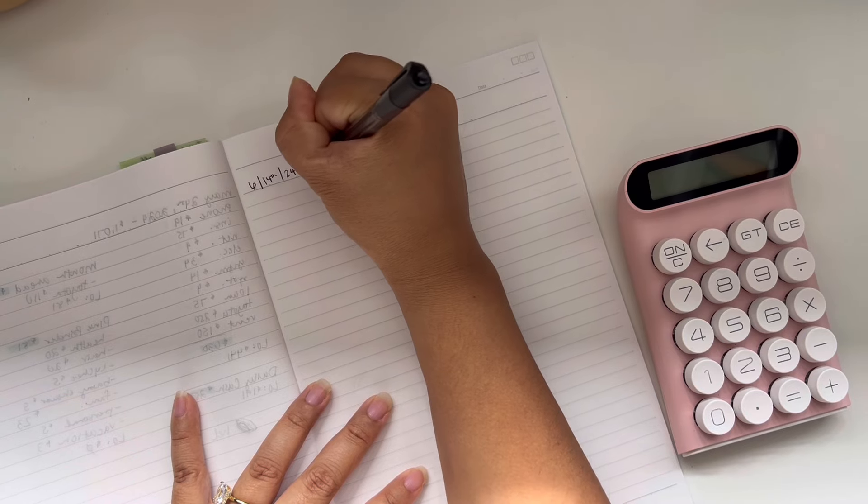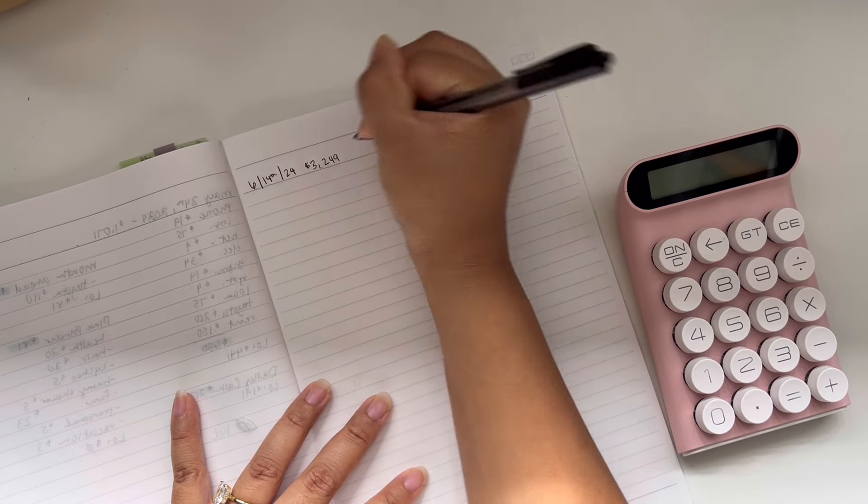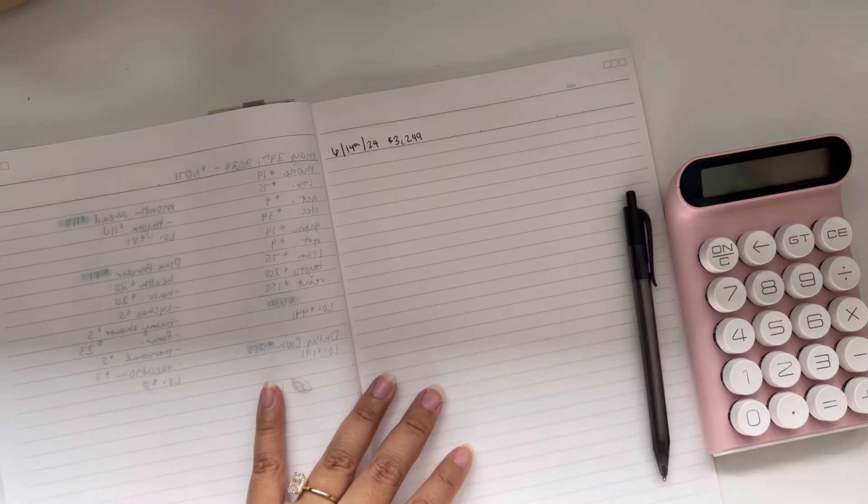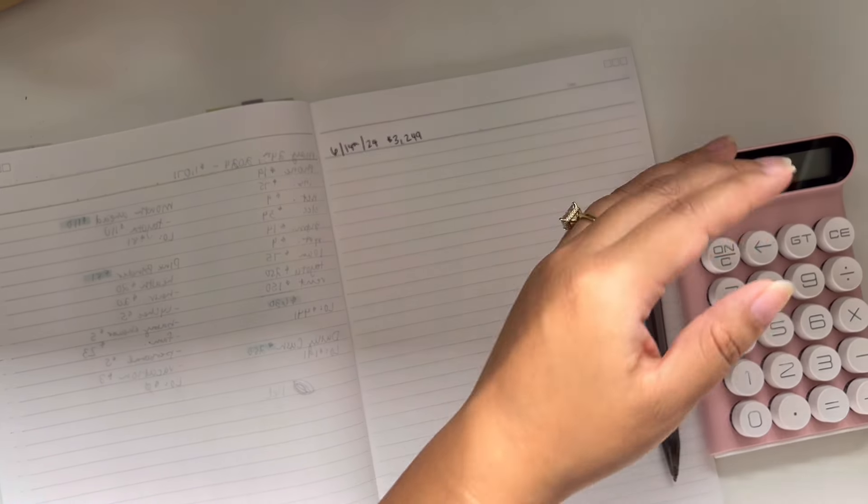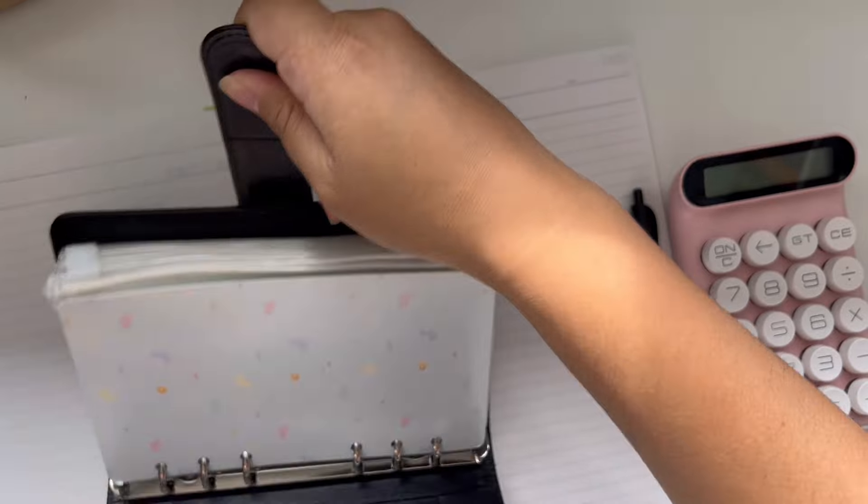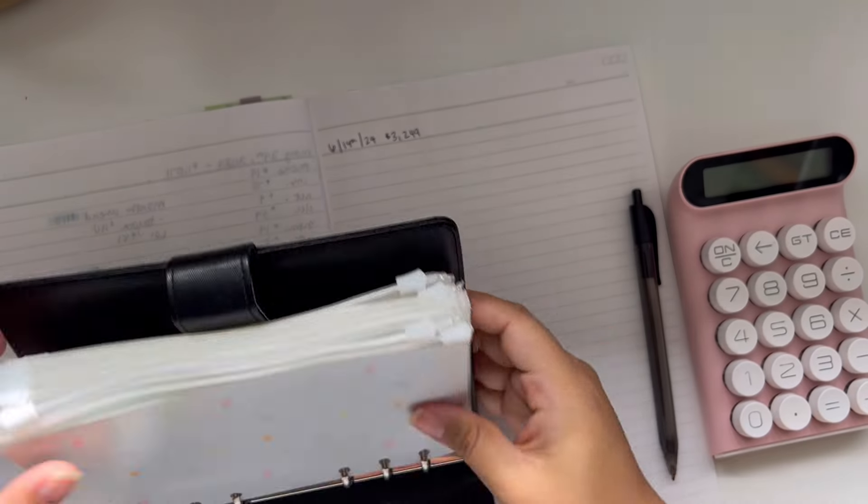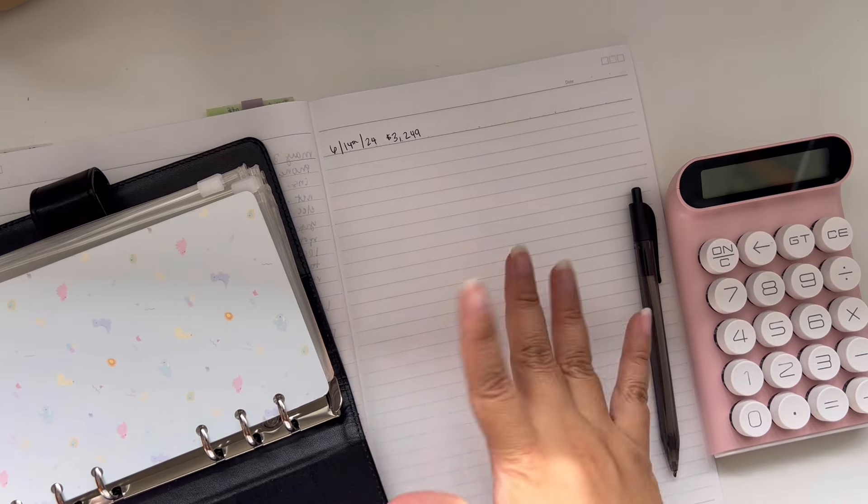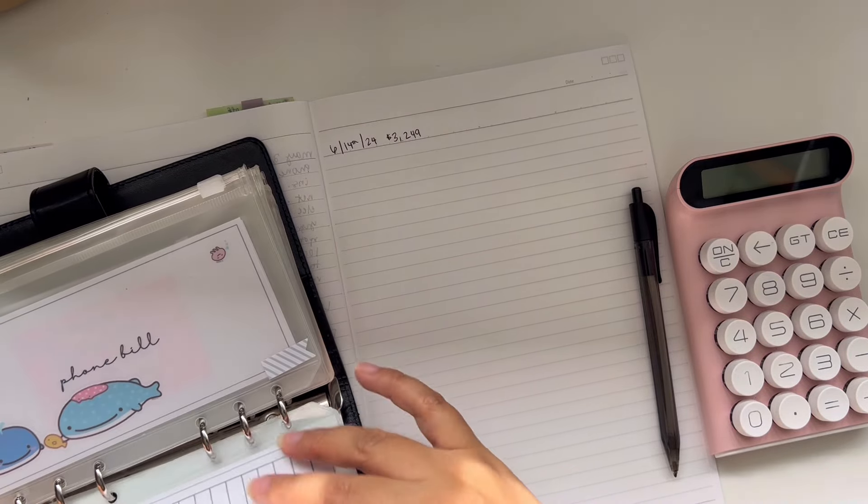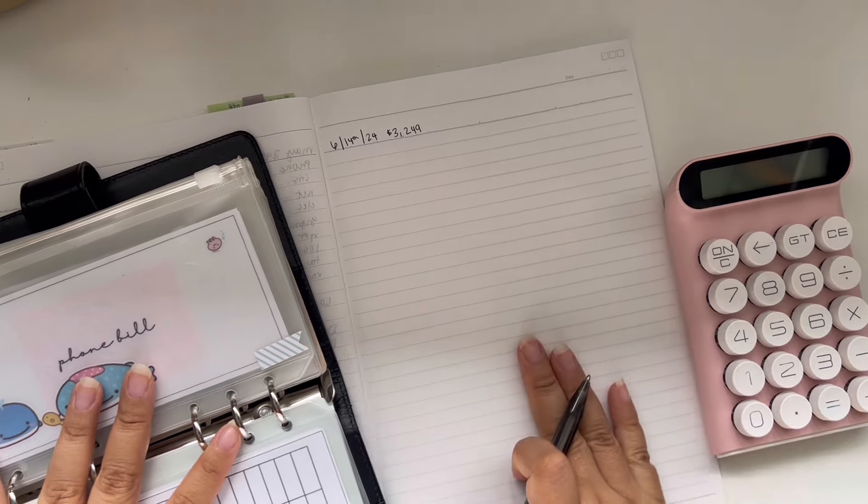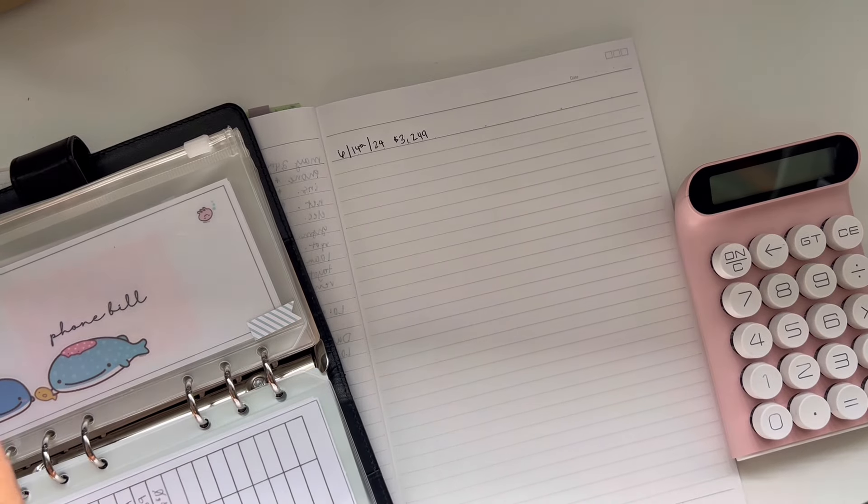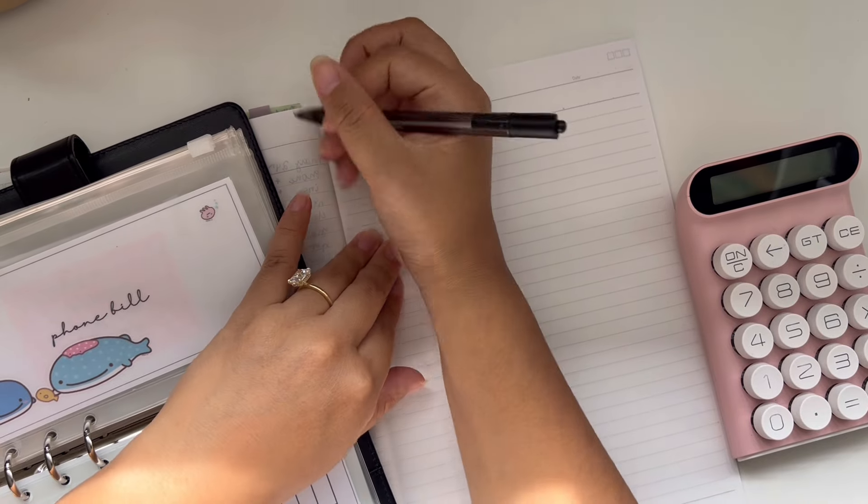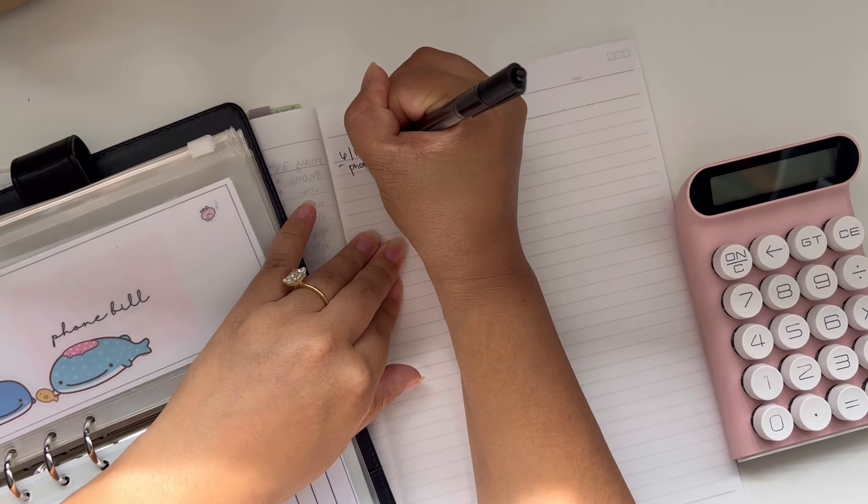So today we're going to be budgeting $3,249. And as always, let's go ahead and get into my bills. A lot of my bills are empty. I just went ahead and paid them pretty much last week, this week. First of all, I'm gonna do phone bill.